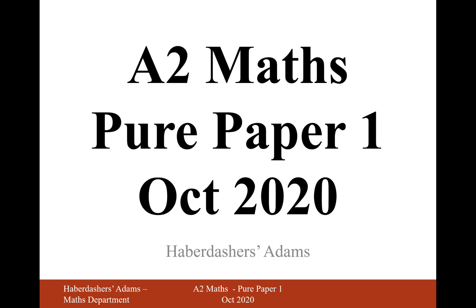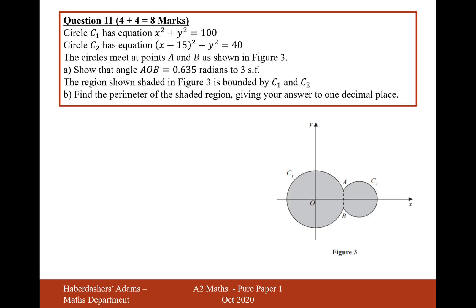Hello there, welcome to the October 2020 Paper 1. Here we're looking at question 11. Circle C1 has equation x squared plus y squared equals 100, so radius 10. Circle C2 has equation x minus 15 all squared plus y squared equals 40.